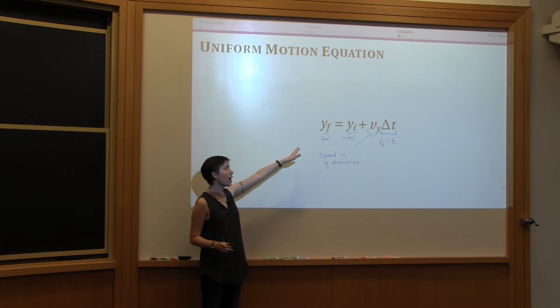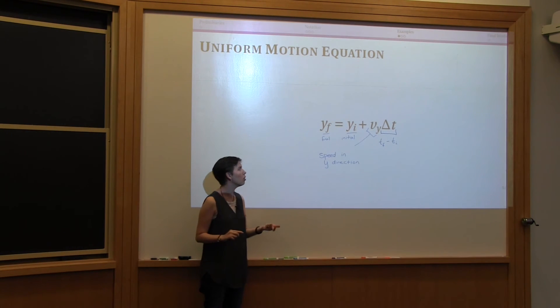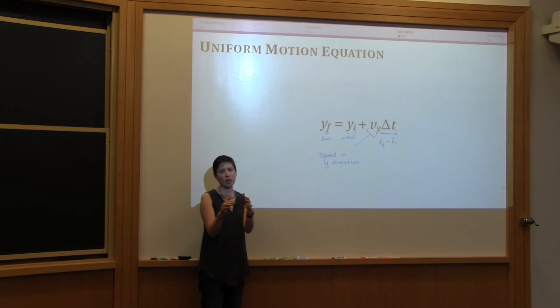So if I was to read this out in words, this would tell you that the final position of an object is equal to its initial position plus the product of the speed that it's going in the y direction multiplied by the length of time that it took to travel. So that's what this means in words, but all of that information is contained in the special notation that we're using.